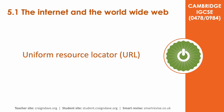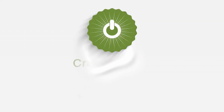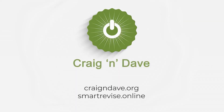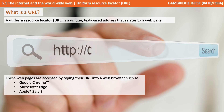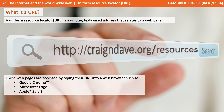In this video we talk about the Uniform Resource Locator, or URL for short. A URL is a unique text-based address that relates to a web page. These web pages are accessed by typing their URL into a web browser, such as Google Chrome, Microsoft Edge, or Apple Safari.